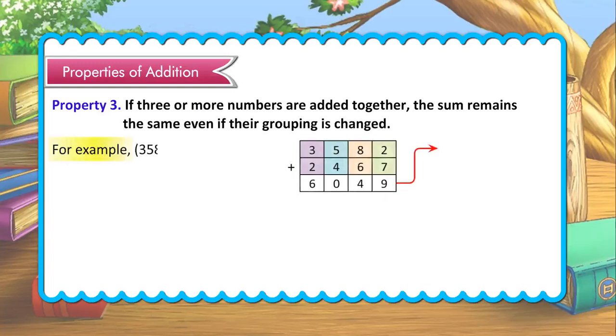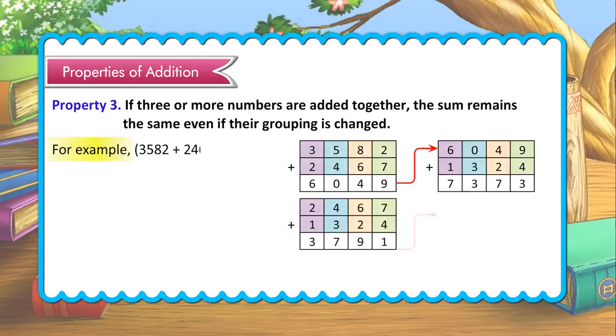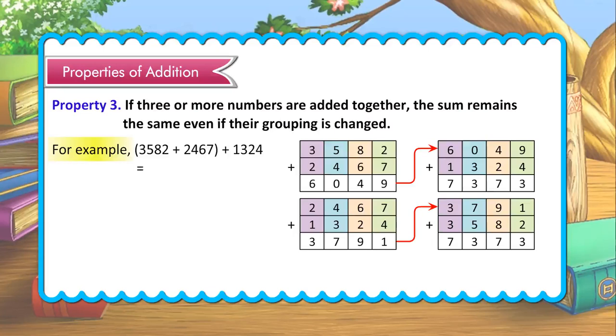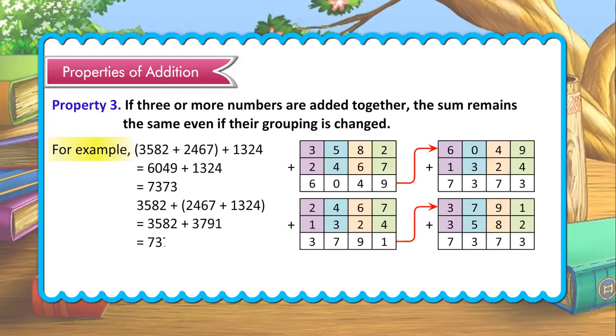3582 plus 2467 plus 1324 equal to 6049 plus 1324 equal to 7373. 3582 plus 2467 plus 1324 equal to 3582 plus 3791 equal to 7373.